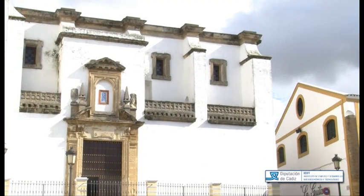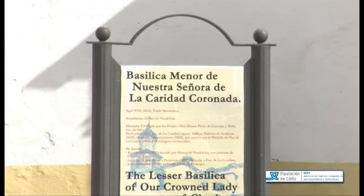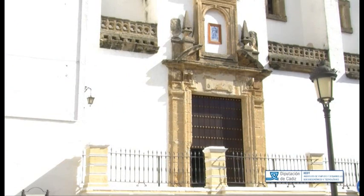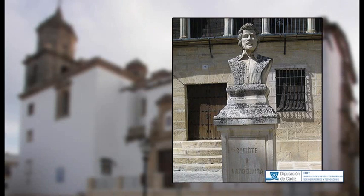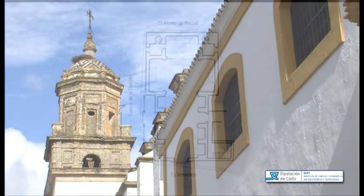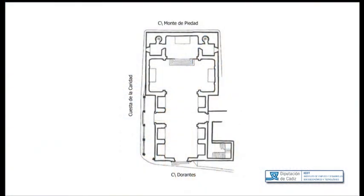El Santuario de la Caridad es una pieza fundamental del conjunto histórico-artístico de Sanlúcar de Barrameda, declarado como tal en 1973. La Basílica, de estilo manierista, es obra de Alonso de Vandelvira y se edificó entre 1610 y 1612. Presenta una planta de cruz latina con brazos cortos y cabecera plana, situándose capillas poco profundas entre los contrafuertes.